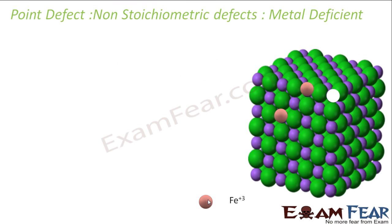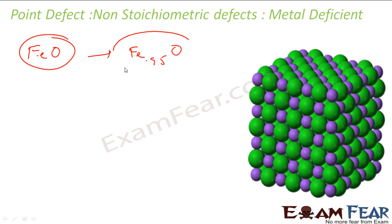Now let's talk about metal deficient defect. FeO, because FeO, this forms Fe0.95O. There is a deficient of metal here. So what happens? Generally if you see here, this is Fe2+ O2-.